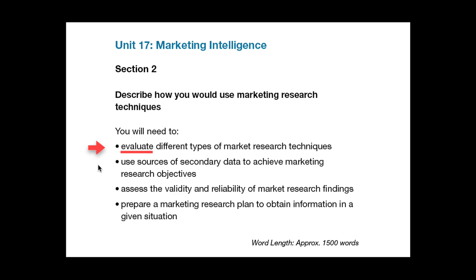Bullet point 2 is looking specifically at using secondary data to achieve your objectives. You could illustrate this by setting some typical objectives and then looking at the types and sources of secondary data available that would allow you to meet these objectives. Make sure the objectives are clear, measurable and achievable, and ensure that any conclusions you draw are realistic and are supported by your data.